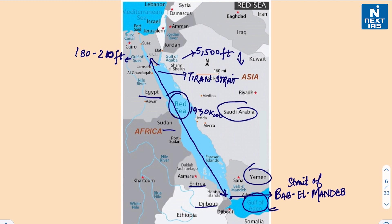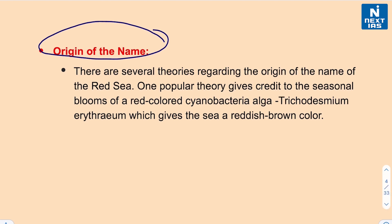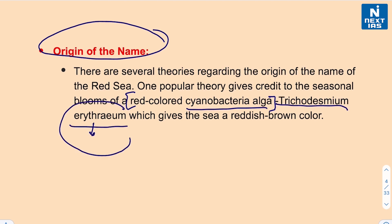The Red Sea also contains some of the world's hottest and saltiest sea waters. Regarding the origin of the name, one popular theory gives credit to the seasonal blooms of red-colored cyanobacteria algae. Normally the Red Sea is intense blue-green in color, but it is populated by extensive blooms of the bacteria Trichodesmium erythraeum. Due to this reason, the Red Sea is also known as the Erythraean Sea. As this cyanobacteria algae dies down, it leaves a reddish-brown color — hence the name Red Sea.